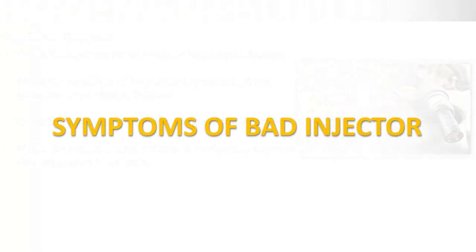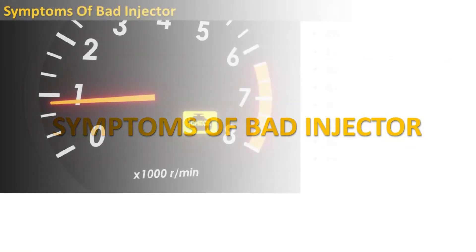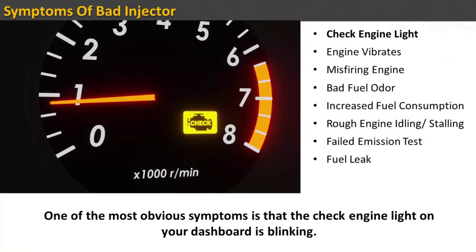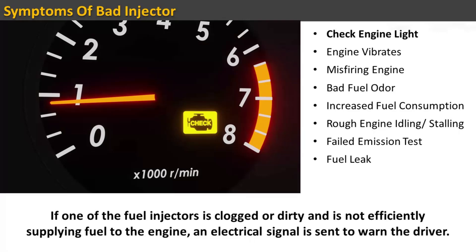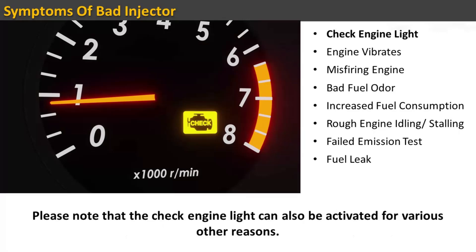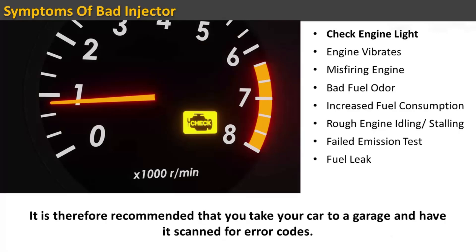Symptoms of a bad injector: Check engine light — one of the most obvious symptoms is that the check engine light on your dashboard is blinking. If one of the fuel injectors is clogged or dirty and is not efficiently supplying fuel to the engine, an electrical signal is sent to warn the driver. Note that the check engine light can also be activated for various other reasons, so it is recommended that you take your car to a garage and have it scanned for error codes.